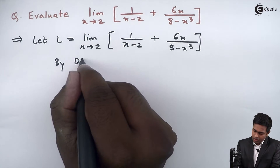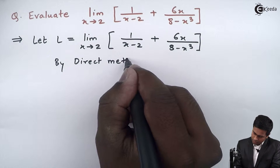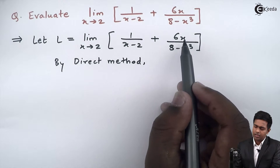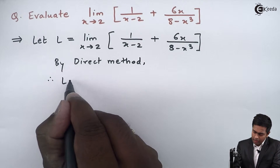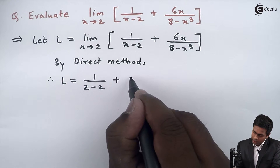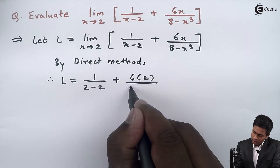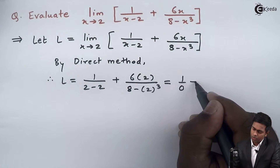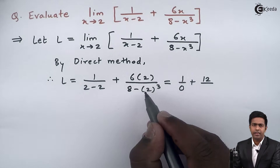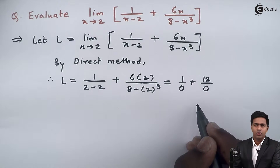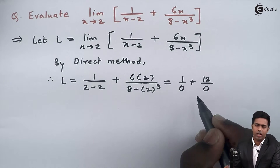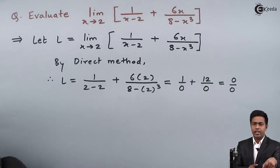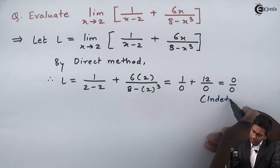By direct method, we substitute 2 directly in place of x in the function. So L will be 1/(2−2) + 6(2)/(8−2³), which gives 1/0 + 12/0. By cross multiplication we get 0 and 0, so this is 0/0, which is an indeterminate form.